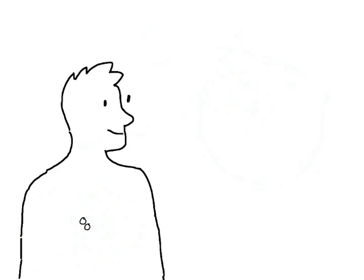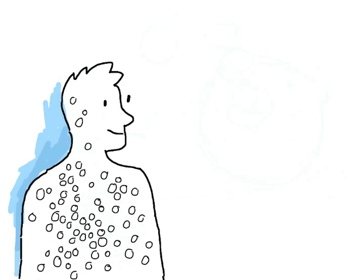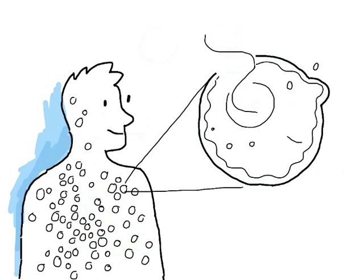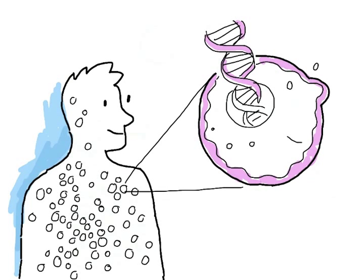You are composed of cells, lots and lots of cells. Each of your cells contains DNA, which is its instruction manual. If you are exposed to things that cause cancer, so are your cells.